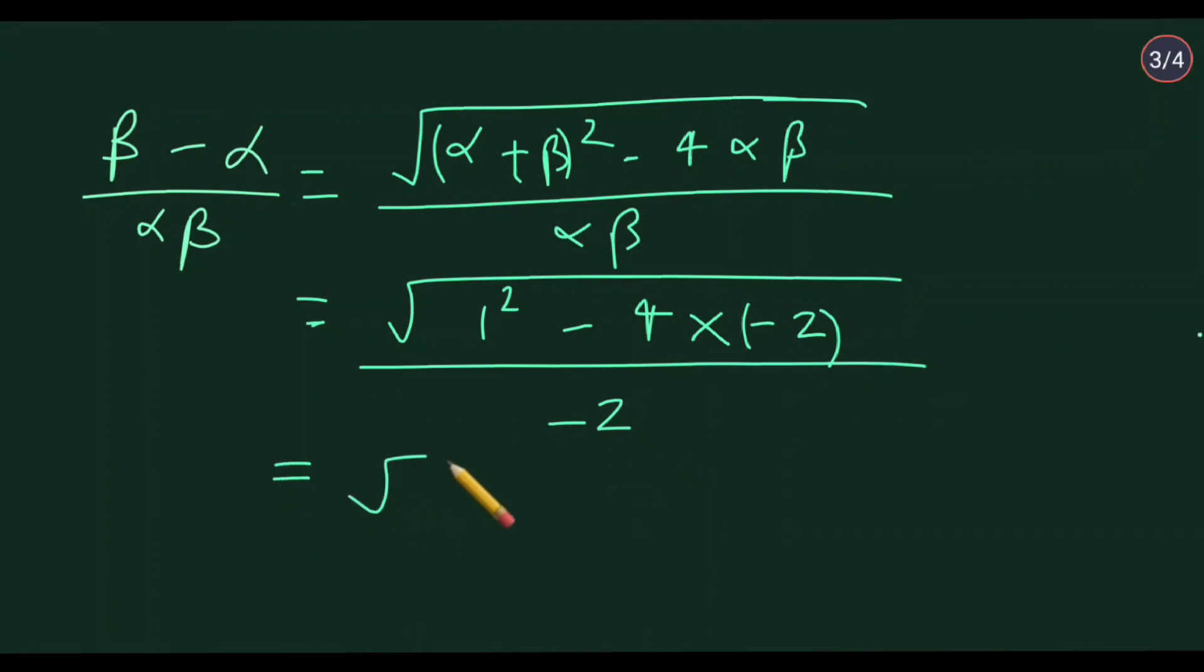This equals root of 1 plus 8, this becomes 1 plus 8, upon minus 2. And when we solve this, we will have root 9 upon minus 2. Here we get two answers. When you solve this, you get plus minus 3 by minus 2, meaning you have 2 values.